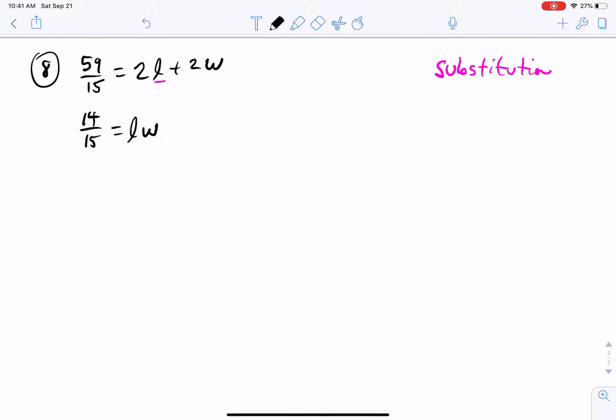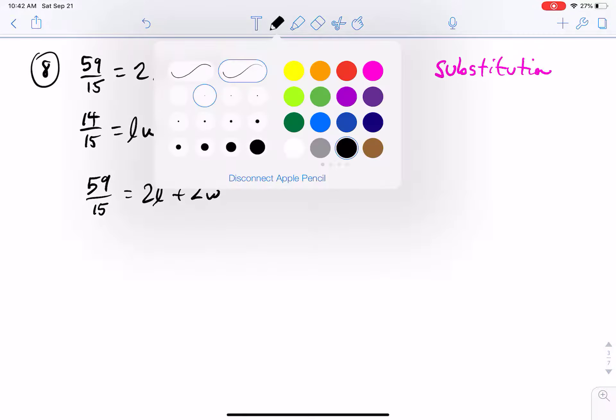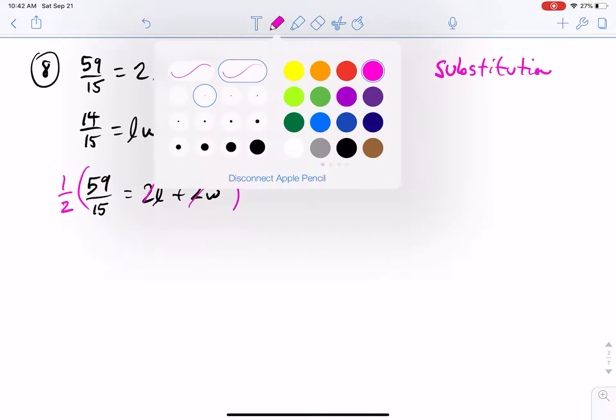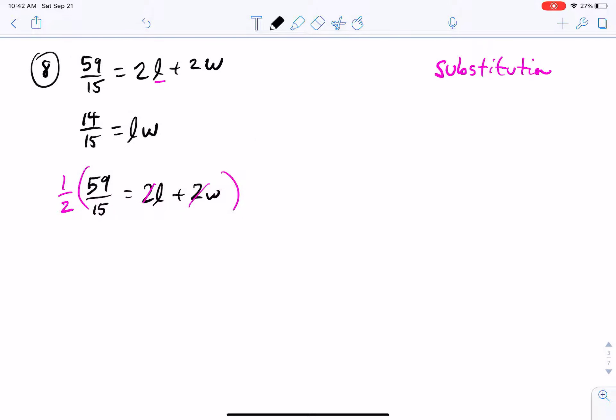So when I recopy this down, I'm going to notice that both of the lengths and the widths, they have a 2 in front of it, which I should probably get rid of. 59 over 15 is equal to 2 lengths plus 2 widths. To get rid of that 2 in front of the length and the width, I could divide both sides by 2. But since I've got a fraction over here on the left-hand side, I'm going to instead multiply by the reciprocal. I'm going to multiply by half.